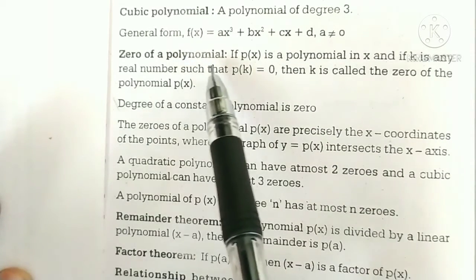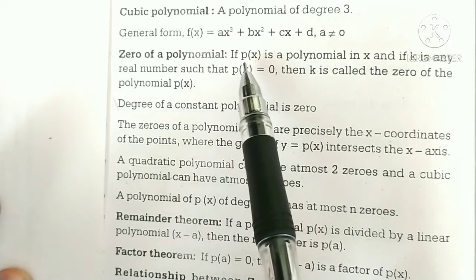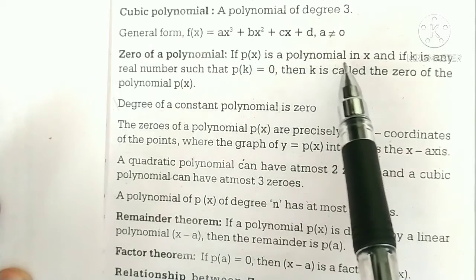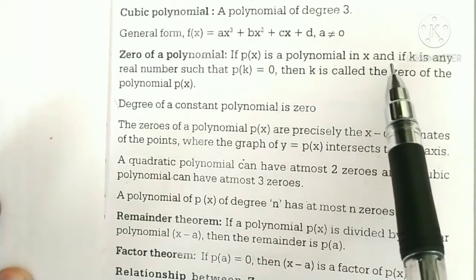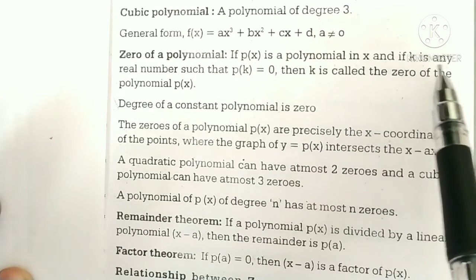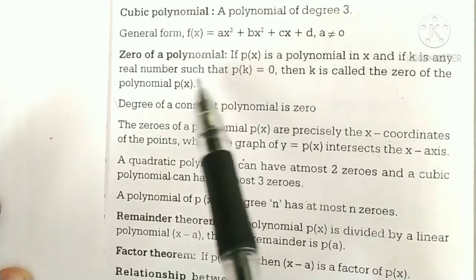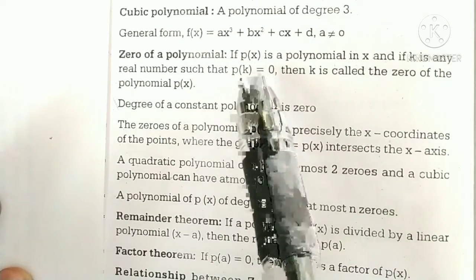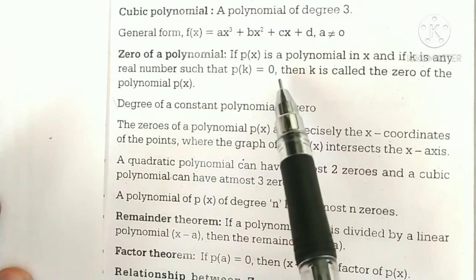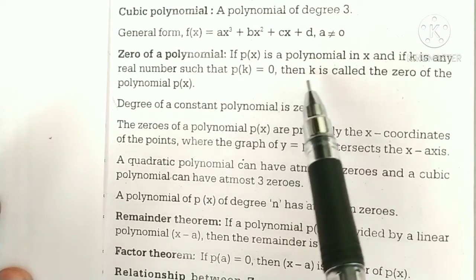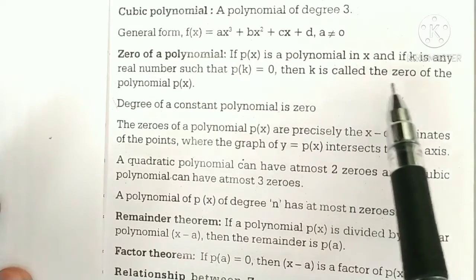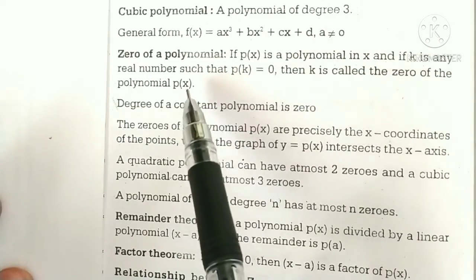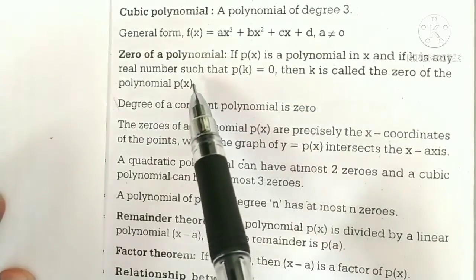Zero of a polynomial: if p of x is a polynomial in x and if k is any real number such that p of k is equal to 0, then k is called the zero of the polynomial p of x.